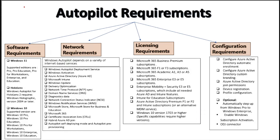Now let's talk about the Windows Autopilot requirements. With respect to Windows Autopilot requirements we can divide them into four types: the very first one is the software requirement, the second one is network requirement, the third one is related to licensing, and the fourth one is related to the configuration requirement.